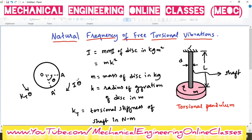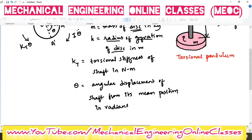Now let us look at the different terms. Capital I is the mass moment of inertia of the disk in kg·m², given by the formula m·k², where k is the radius of gyration and m is the mass of the disk in kg. Capital KT is the torsional stiffness of the shaft. Theta is the angular displacement of the shaft from its mean position, in radians.